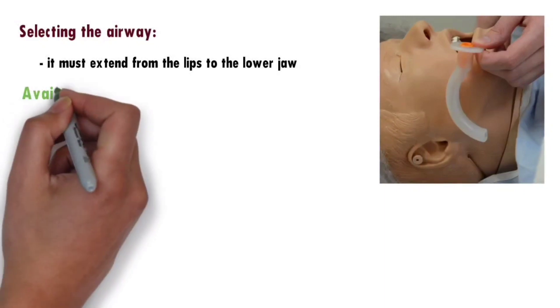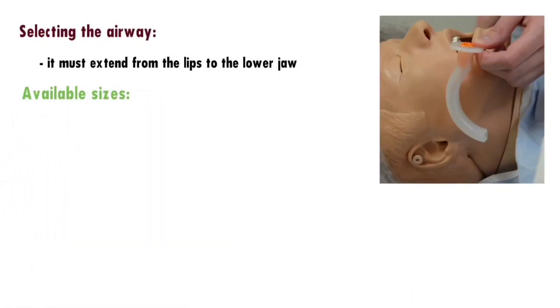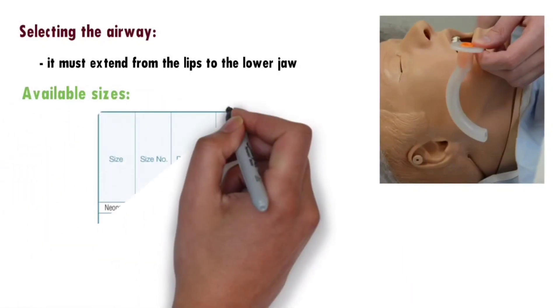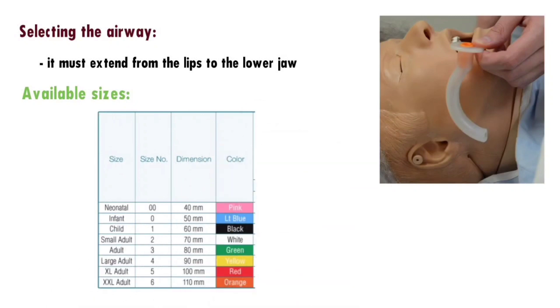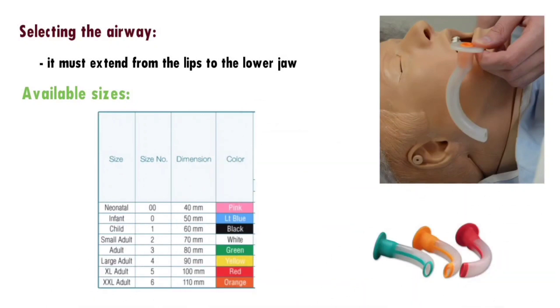Available sizes: there are six available oropharyngeal airway sizes. Sizes 0-0, 1, and 2 are used for children, while sizes 4, 5, and 6 are used for adults. Color-coded bite portions can aid in easy size identification.